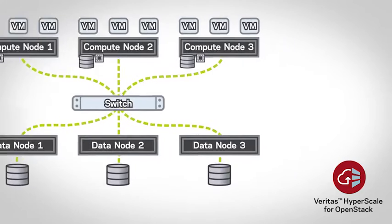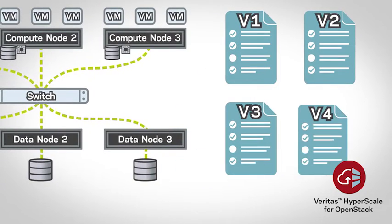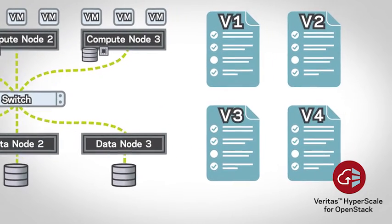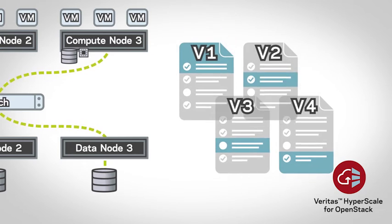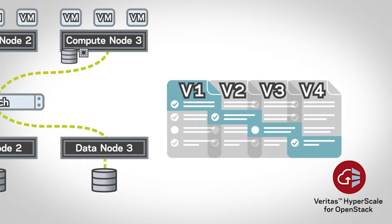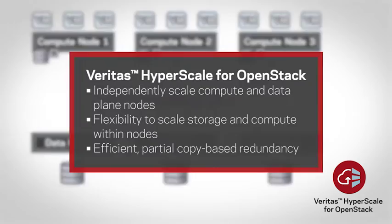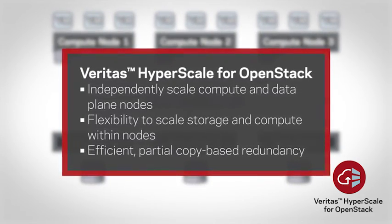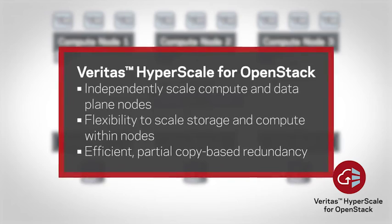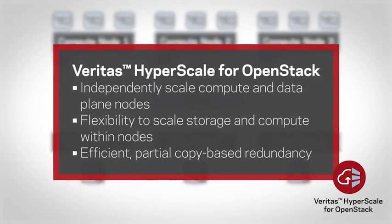Finally, unlike some solutions that keep multiple whole copies of the data, our design uses a more efficient approach that implies partial copies in the full DAS storage while still providing redundancy, thereby saving on storage costs. Veritas Hyperscale for OpenStack helps you achieve the performance and resilience you need in private cloud environments while optimizing storage and operational costs.